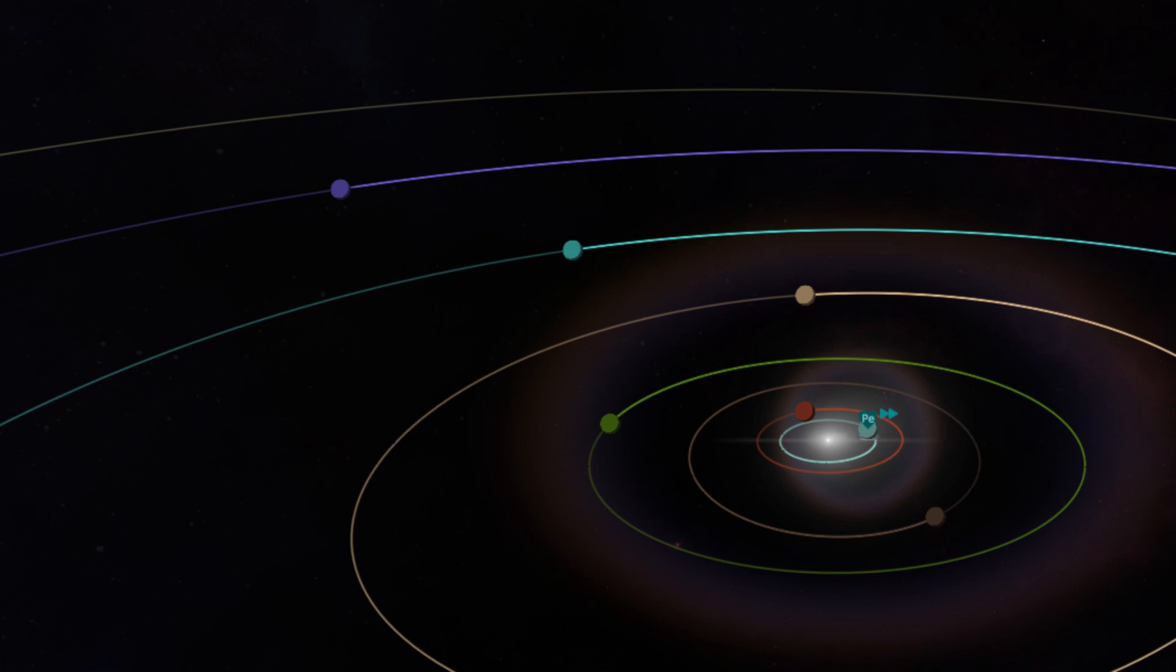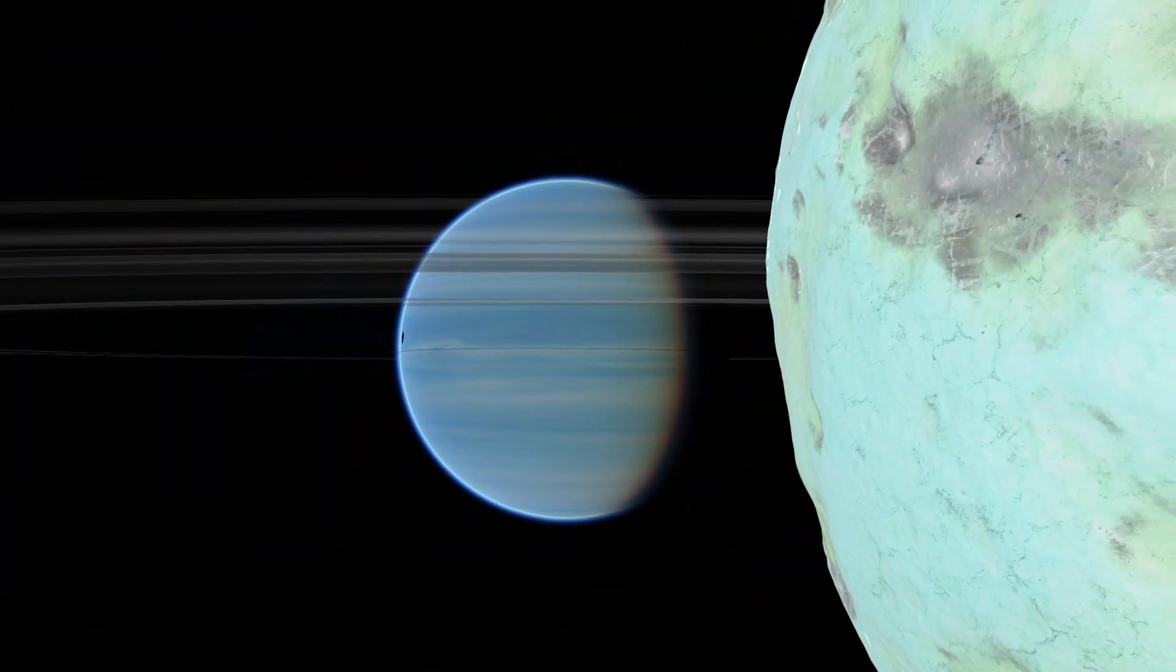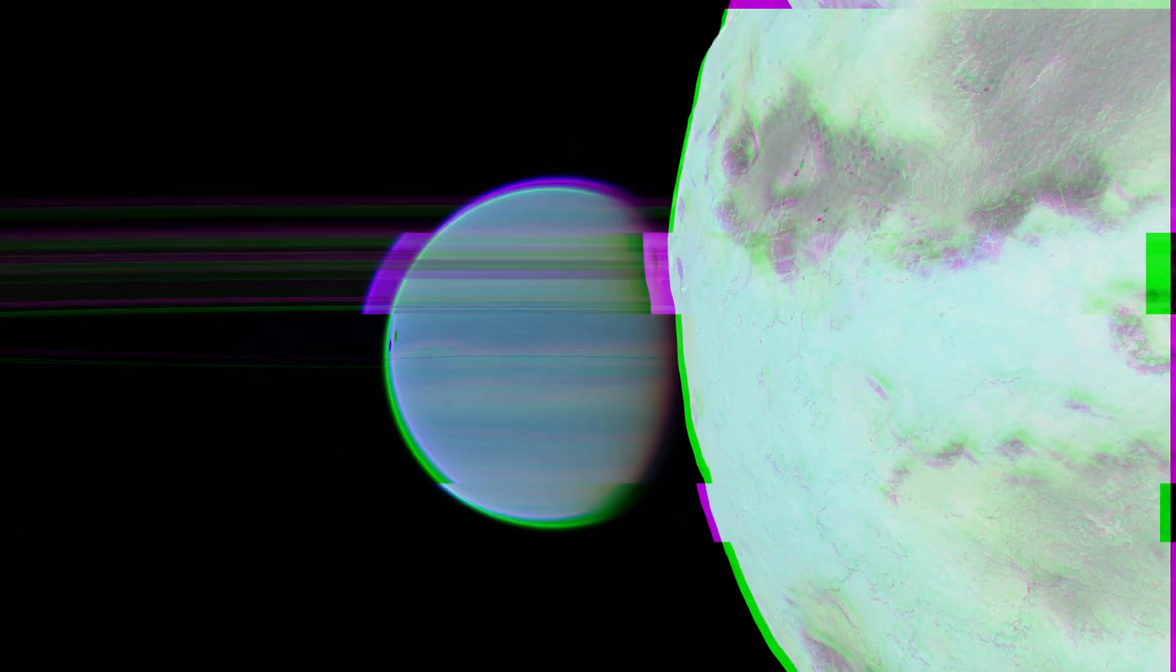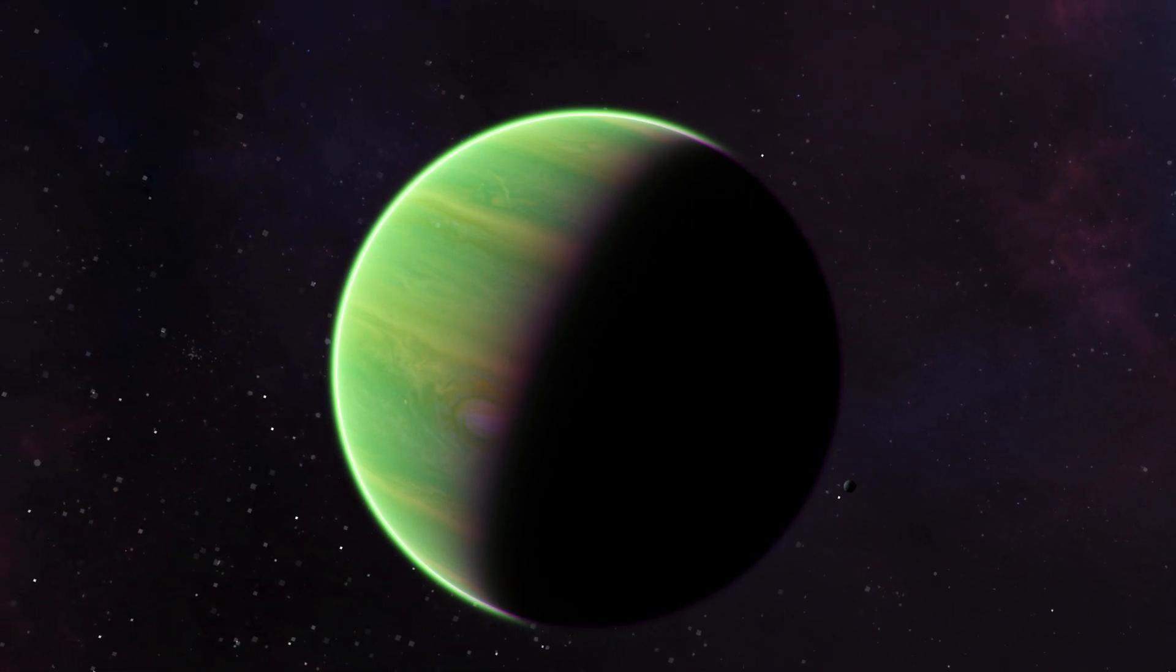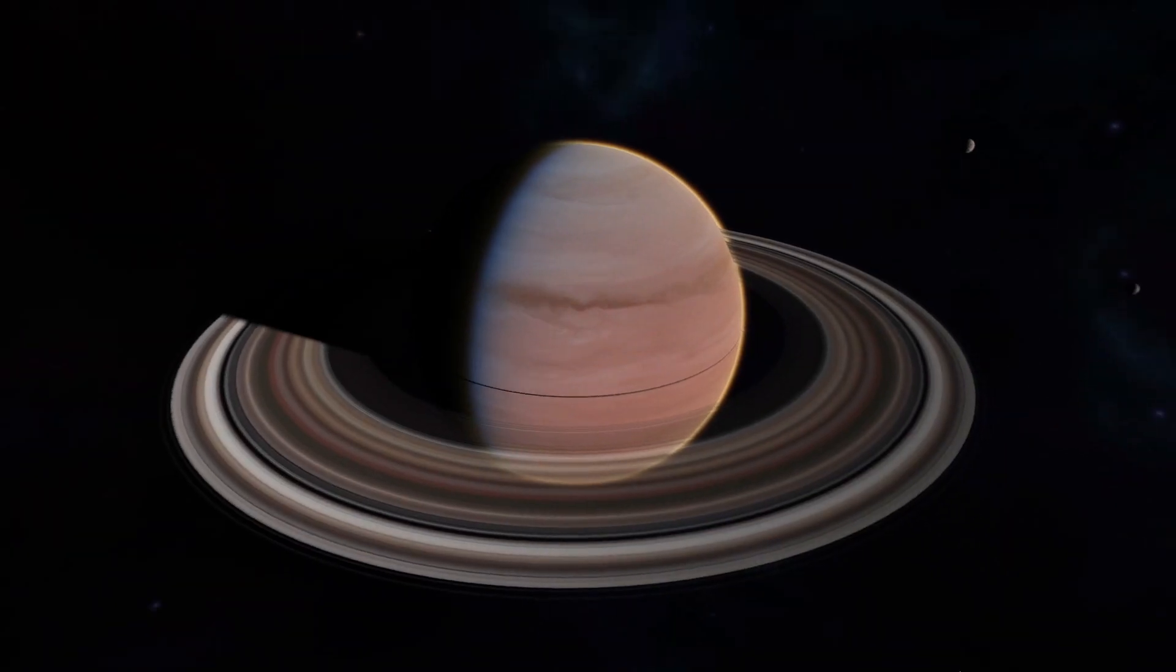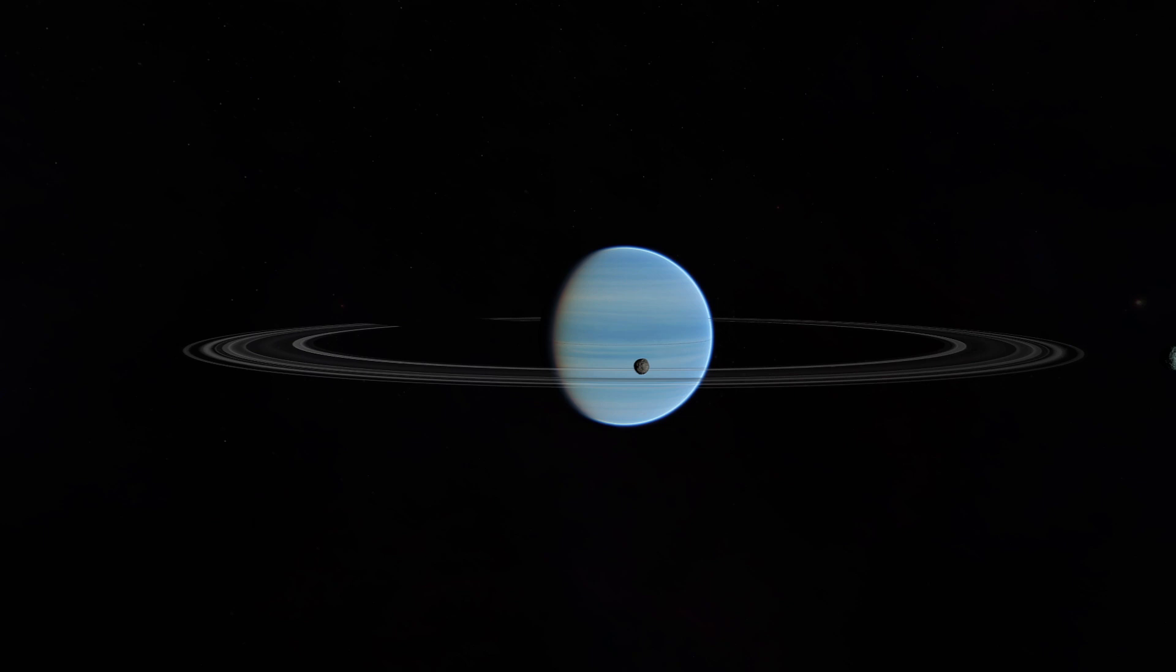The Outer Planets mod provides Kerbal Space Program with a lot more exploratory fun, which we will make use of. The original Kerbal system has a Jupiter counterpart that we all know, and this mod adds planets equivalent to Saturn, Neptune and Uranus.